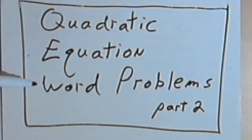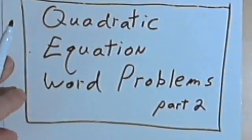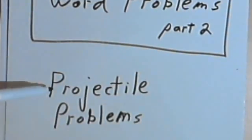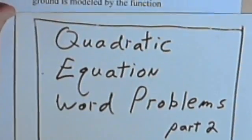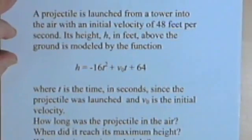This is going to be the second video about word problems that are solved with quadratic equations. And what I want to do this time is something called a projectile problem. Now projectile problems are simply things that are thrown or hit or launched into the air. So a baseball is a projectile, a basketball, a rock that's thrown into the air, a rocket, anything like that is a projectile. So here's the problem.